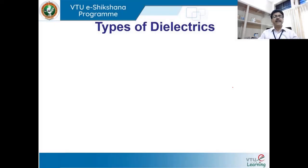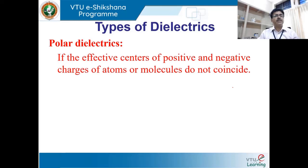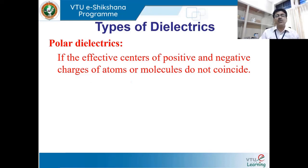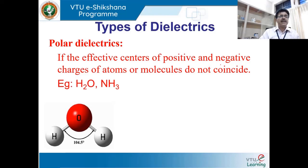The second type of dielectric is the polar dielectric. Its definition states that if the effective centers of positive and negative charges of an atom or molecule do not coincide — that is, they do not overlap — and there are two separate charge entities, then such molecules are called polar dielectric materials.